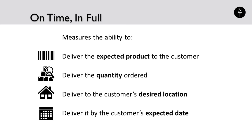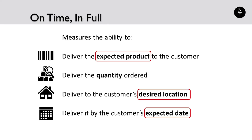The last metric I'll discuss is OTIF, or on-time in-full. This metric measures the ability to deliver the expected product to the customer — meaning the right product, the quantity ordered, delivered to the customer's desired location, and by the customer's expected date. While the fill rate measures the ability to fill orders, OTIF includes additional factors such as order accuracy and timing. It is possible to send an order in full but several days late or with the wrong product — OTIF takes these additional customer satisfaction factors into account.